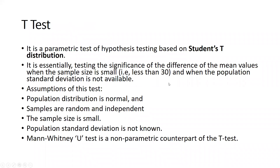Next we come to the t-test. The t-test is a parametric test of hypothesis testing based on Student's t-distribution. It is essentially testing the significance of the difference of mean values when the sample size is small — that is less than 30 — and when the population standard deviation is not available. When the standard deviation is available, then we are going to use the z-test. Assumptions of this test: population distribution is normal, samples are random and independent, sample size is small, and population standard deviation is not known.